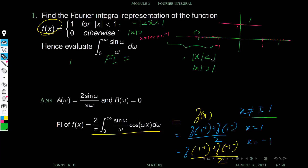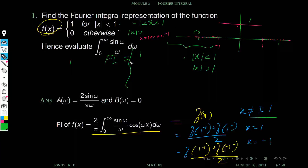When |x| > 1 — either to the right or left — our function value is throughout zero and it is continuous, so the Fourier integral equals zero, exactly equal to f(x). These two cases give Fourier integral equal to f(x).